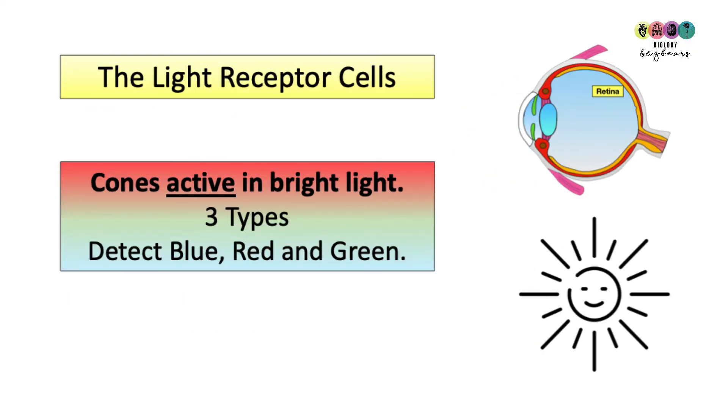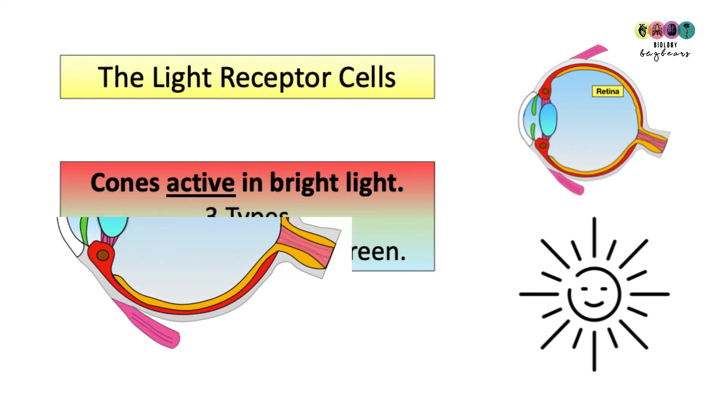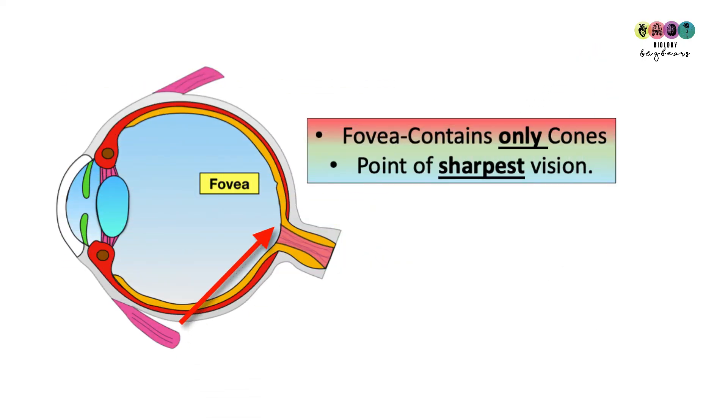The cones are the light receptor cells that are active in bright light and there are three different types: some that detect blue, red and green light. The fovea is this place on the iris that contains only cones, no rods. For this reason it's our point of sharpest or keenest vision. There are many cones located in this tiny place, the fovea.